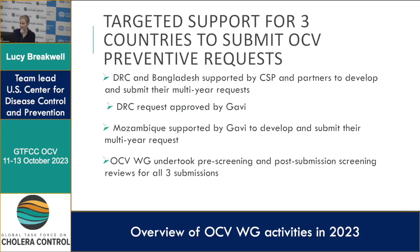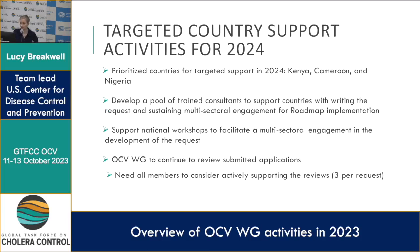The second piece of operational work was targeted country support. For three countries, we've supported OCV preventive request submissions — mostly thanks to the CSP. DRC and Bangladesh were supported strongly by CSP and partners to develop and submit their multi-year requests; the DRC request has been recommended for approval to GAVI. Mozambique was supported more directly by GAVI to develop their multi-year request. The OCV working group undertook pre-screening and post-submission screening reviews for all of these. For next year, prioritized countries for support include Kenya, Cameroon, Nigeria, and Nepal. We would also like to develop a pool of trained consultants to help develop these requests.